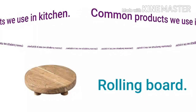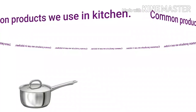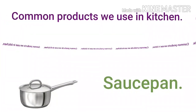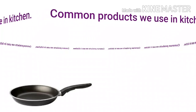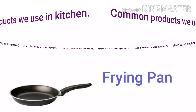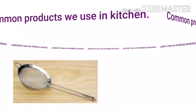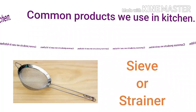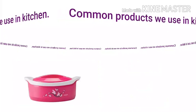The next products are saucepan and frying pan — you have to know the difference between these. Mostly jisme hum chai banate hai, usko hum frying pan samajhte hai, but actually it is known as saucepan. And jisme hum tadka lagate hai, usko hum bolte hai frying pan. Then comes jisme hum chhanthe hai — chai wagera — usko hum bolte hai sieve ya phir strainer.